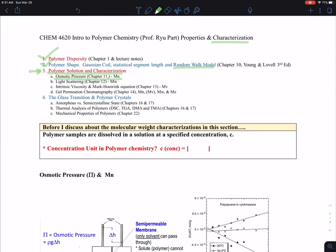The first one is we want to characterize molecular weight or molecular weight distribution or different types of average molecular weight. So in order for us to do this experiment, we need to dissolve the polymer in a solution. This is a very important basic concept. Polymer samples have to be dissolved in a solution at a specified concentration.